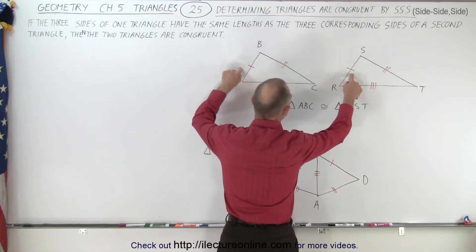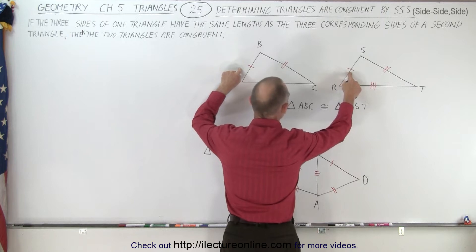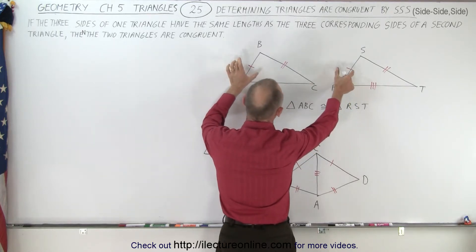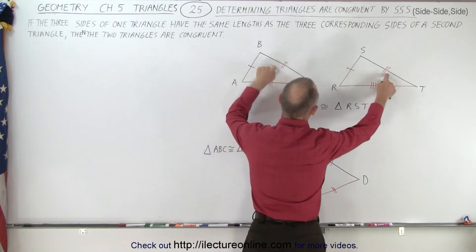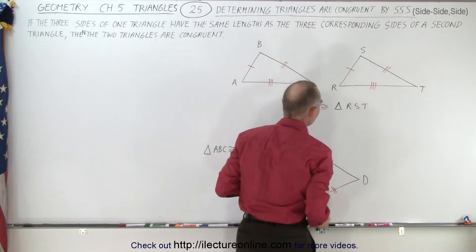We can see that the corresponding sides of these two triangles have equal length, which is indicated by the single line over there, the double lines over there, and the triple lines over there.